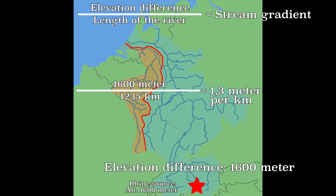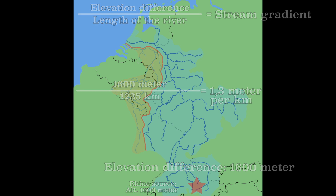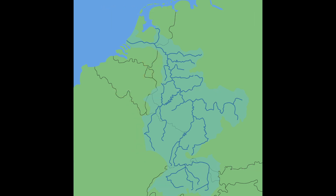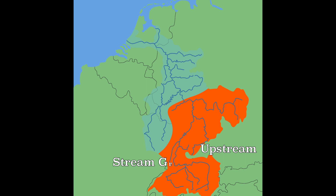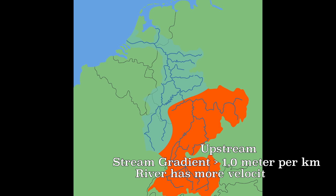All the way upstream at the headwaters, little streams converge to form a main river. For the Rhine, this is the part that flows into the mountain landscape. Here the stream gradient is very high, often more than 1 meter per kilometer. This gives the river more power and erodes the landscape. For the Rhine, this is roughly the area from the source to the city of Bingen.